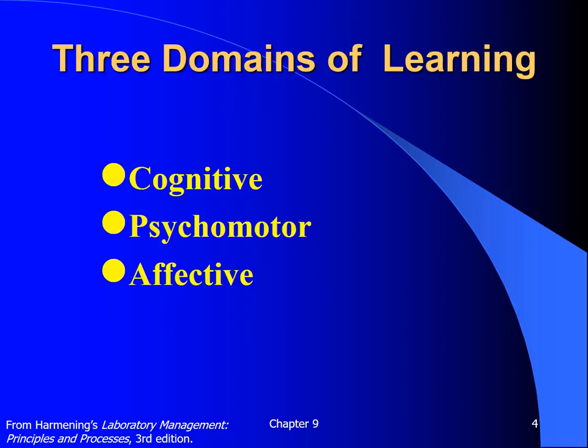The three domains of learning are cognitive, psychomotor, and affective. Cognitive refers to acquiring and applying knowledge. Psychomotor refers to the ability to perform tasks or skills. Affective refers to attitudes or feelings.